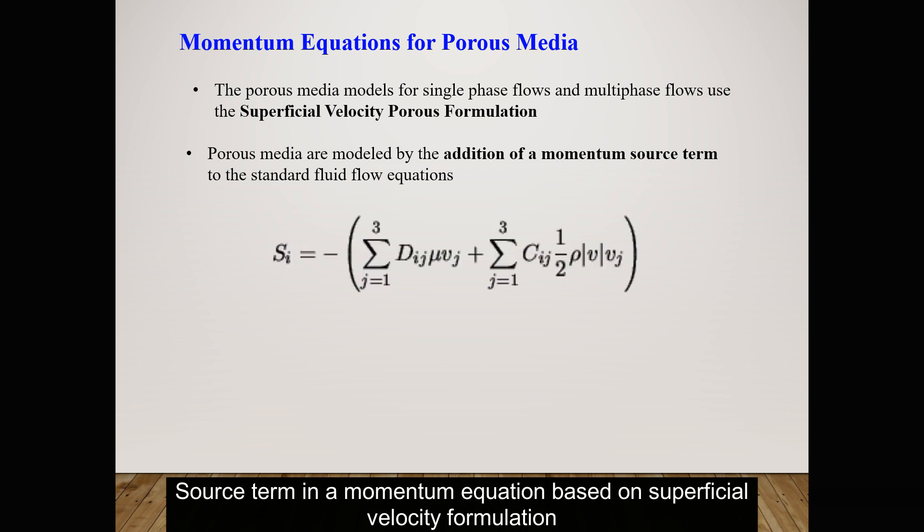This momentum source term has two parts: first is due to viscous effects and second part is due to inertia. These two factors are responsible to cause pressure drop, and pressure drop causes momentum change. In this case, velocity changes and we have to see how pressure drop is calculated.